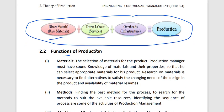Now, the functions of production. First is selection of material for the product. We need to know what materials are available in the market and how to purchase them. The production manager must have sound knowledge of materials and their properties — for example, knowing which materials are needed and how to combine two or three materials into a single output like a phone.